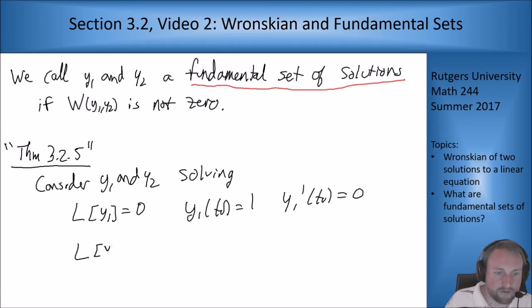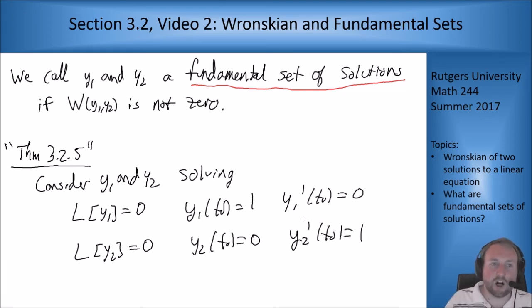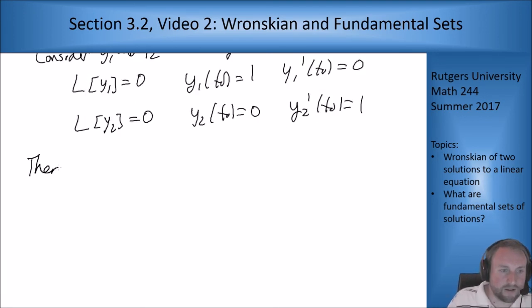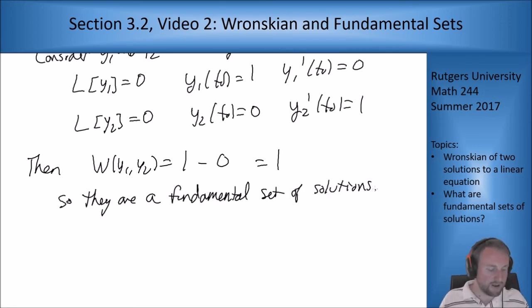L of y2 equals 0, Y2 at t0 equals 0, Y2 prime at t0 equals 1. Then these guys are a fundamental set of solutions. You can calculate the Wronskian of y1 and y2 is just 1 minus 0 equals 1. So they are a fundamental set of solutions. The point is fundamental set of solutions always exist and you can find them just by using this approach.